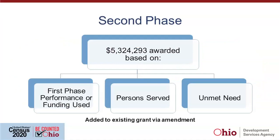The second phase of the money — which is the balance of the $21.3 million — will be awarded later in the year. What we want to do is get some information on how the first phase funds are being used, what the performance is, persons served, and the unmet needs. Once those funds are awarded, it will be awarded to you based on a grant amendment to your existing grant agreement. We want to get some experience and a better idea of what the need is in the state before awarding the second phase.